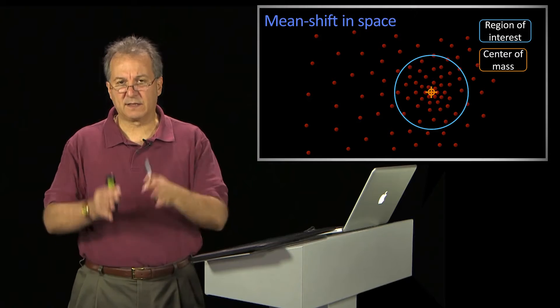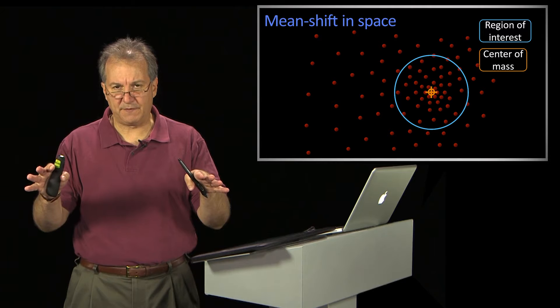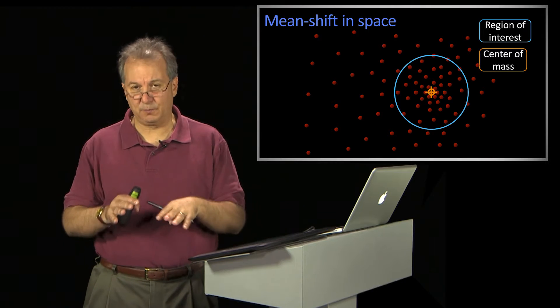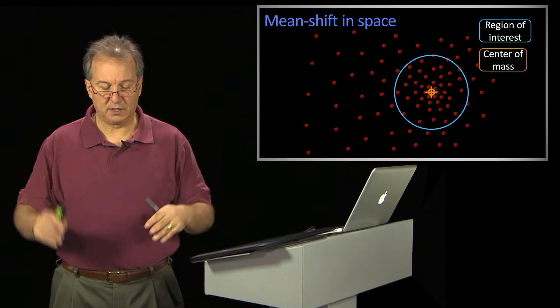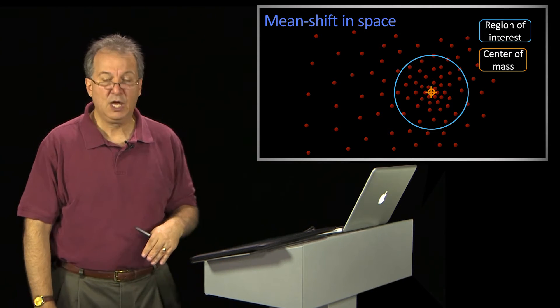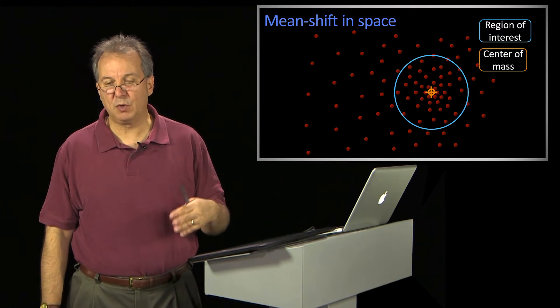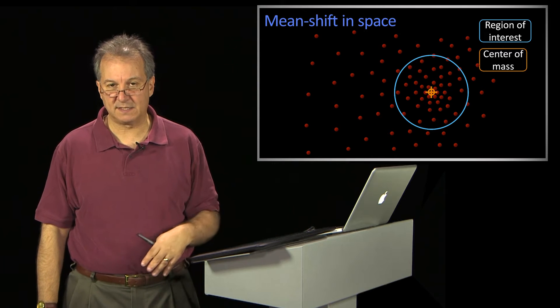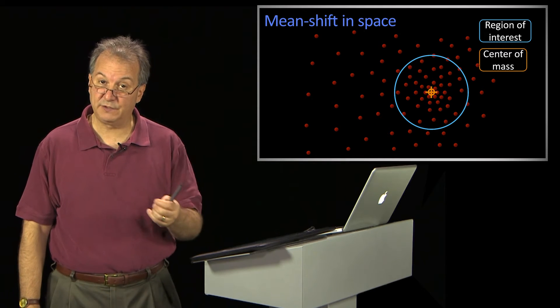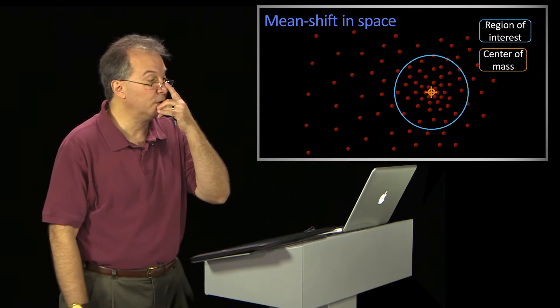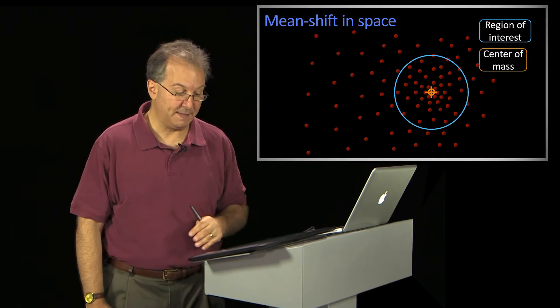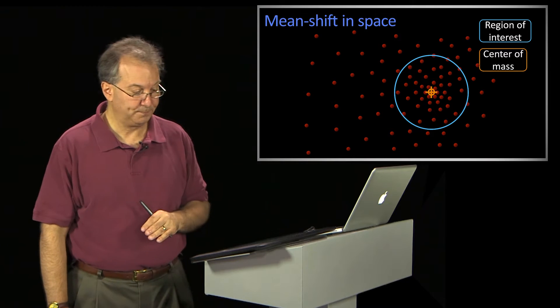What's kind of cool about mean shift — under some reasonable assumptions, like the shape of the thing that you put down, which is a kernel kind of thing, you can prove that in most circumstances this thing will converge. So it'll actually find those modes, and that's really cool.